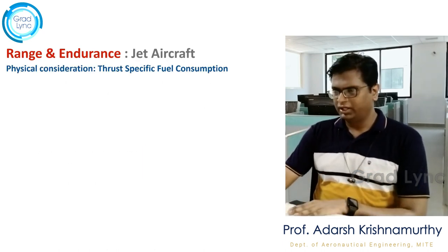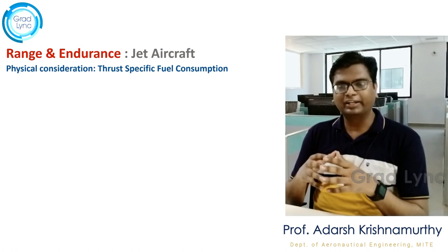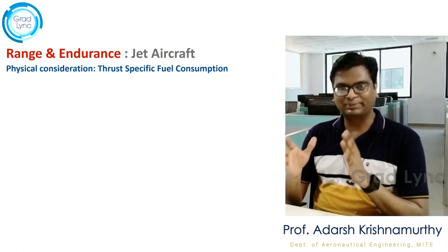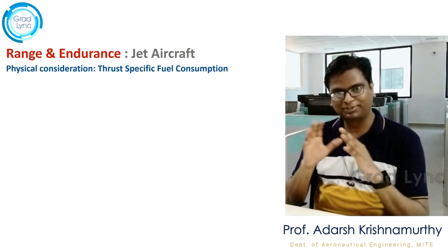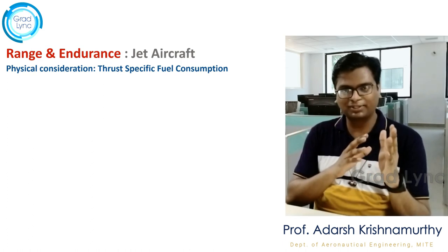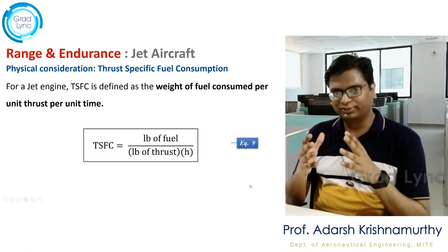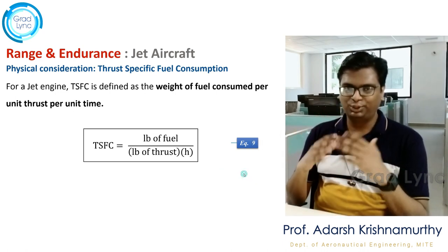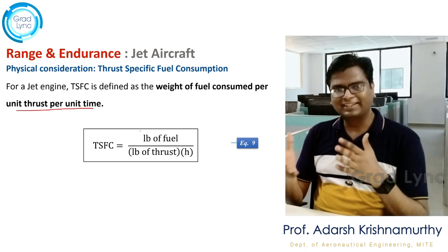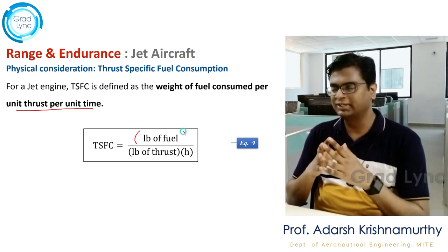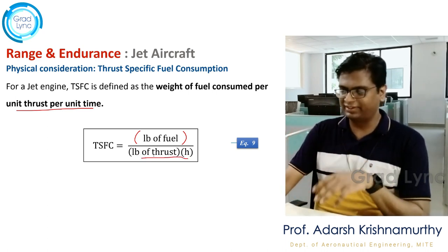In order to get the equations for jet-powered aircraft, I need to define a new parameter called thrust specific fuel consumption (TSFC). It is similar to specific fuel consumption, but we replace power with thrust. It is defined as the weight of fuel consumed to generate a unit amount of thrust per unit time. In British units, it is the pounds of fuel consumed per pound of thrust generated per unit time. Let's call that equation number 9.